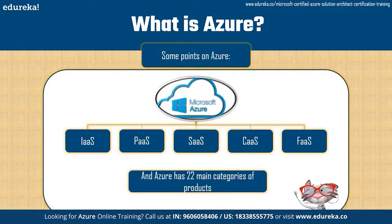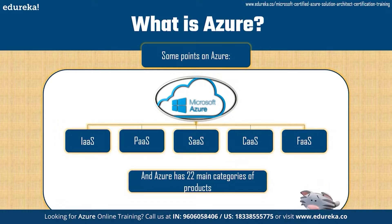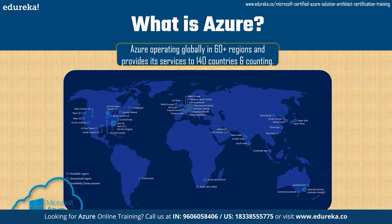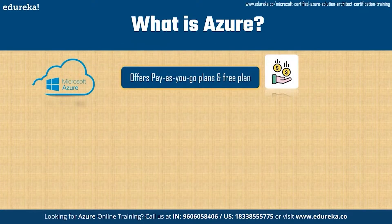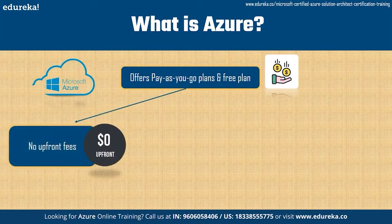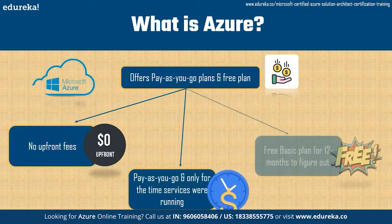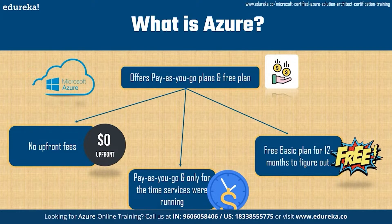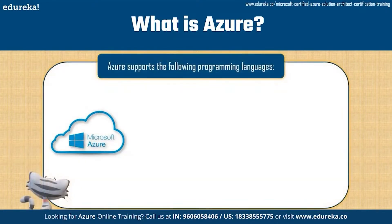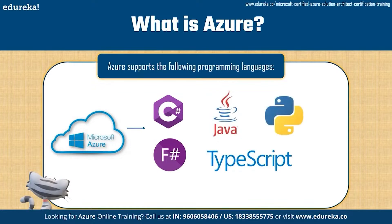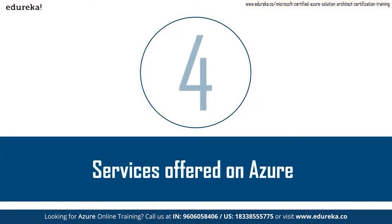Azure provides five distinct types of services: infrastructure as a service, platform as a service, software as a service, container as a service, and functions as a service. Azure has 22 main categories of products with over 600 services total, and operates globally in 60-plus regions, providing services to 140 countries and counting. Azure offers pay-as-you-go plans with no upfront fees — you only pay for the time your services are running — as well as a free plan valid for 12 months. Supported languages include C#, F#, Java, TypeScript, and Python.